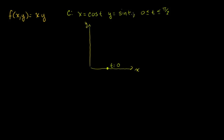When t is equal to pi over 2, cosine of pi over 2 is 0, and sine of pi over 2 is 1, so we're going to be at the point (0, 1). You might recognize we're going to draw the first quadrant of the unit circle. When t is equal to pi over 4, or 45 degrees, we're going to be at (√2/2, √2/2). We're just going to have a curve that looks like the top right of the unit circle, with radius 1, going from t equals 0 to t equals pi over 2.